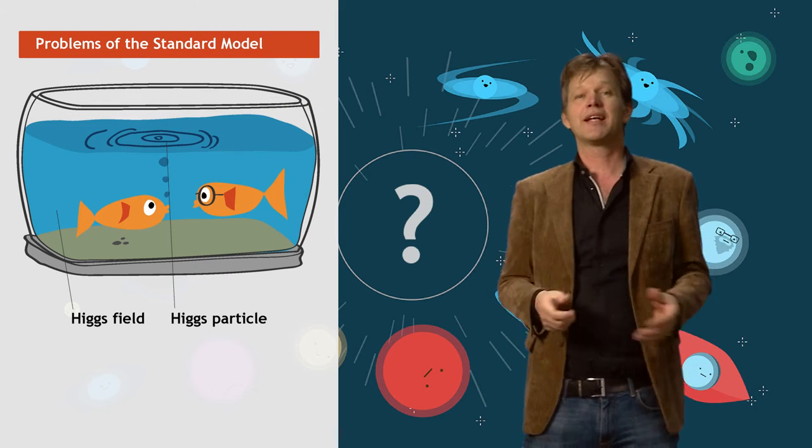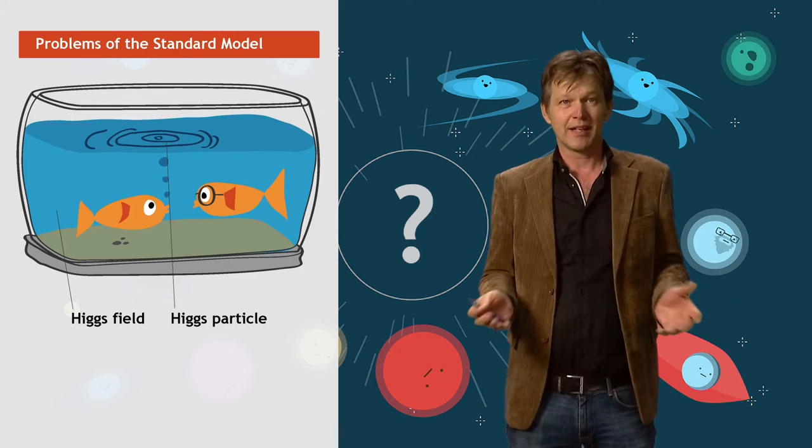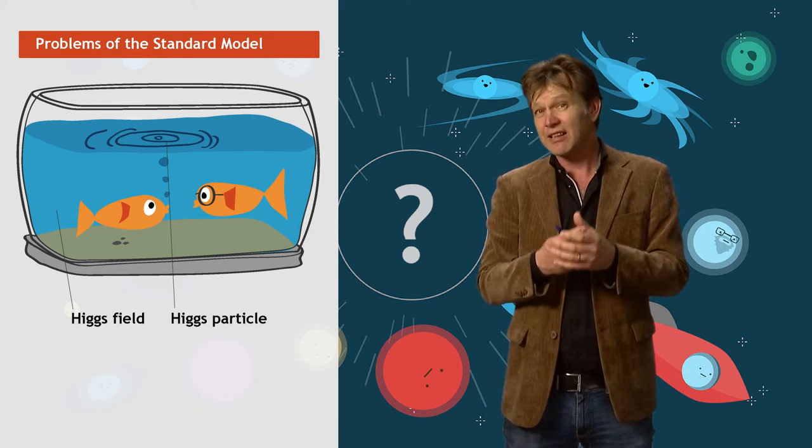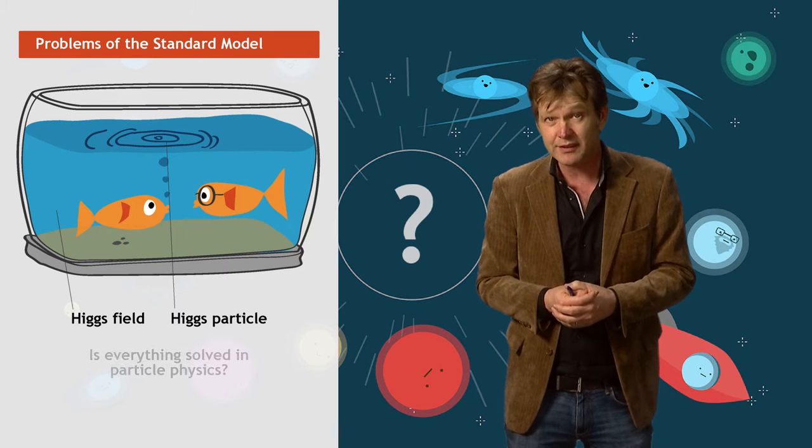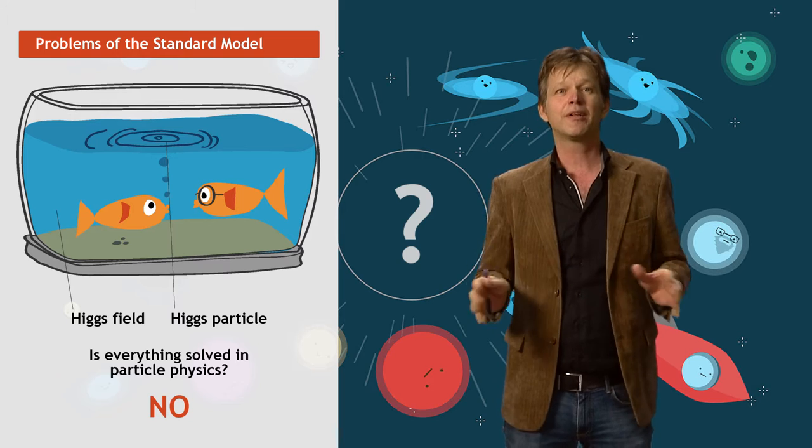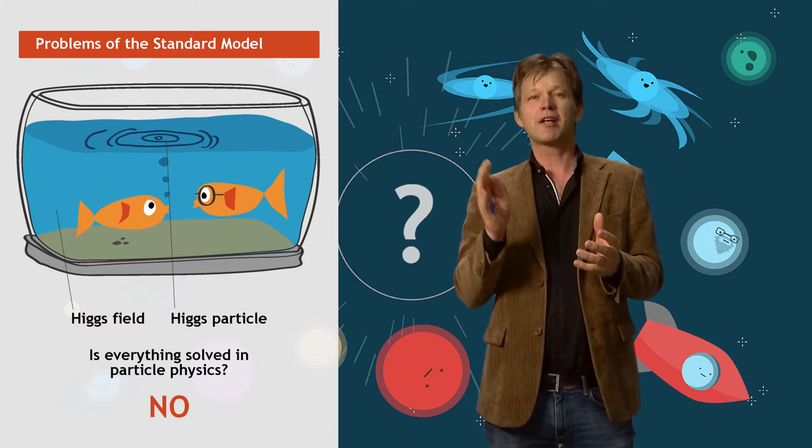With this Higgs mechanism, the standard model is complete. And it's able to describe particles that have mass. And so, is now everything solved in particle physics? Well, certainly not. The standard model has a number of features that are impossible to understand.